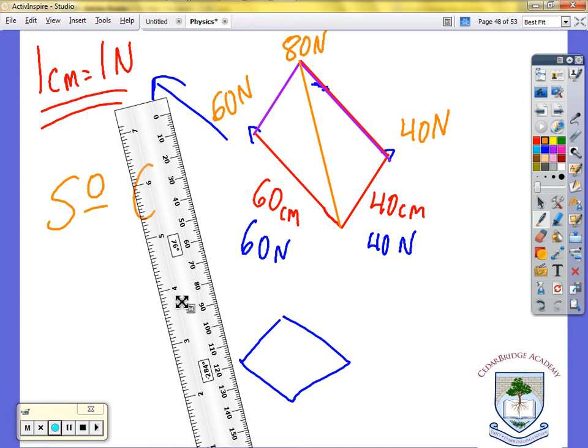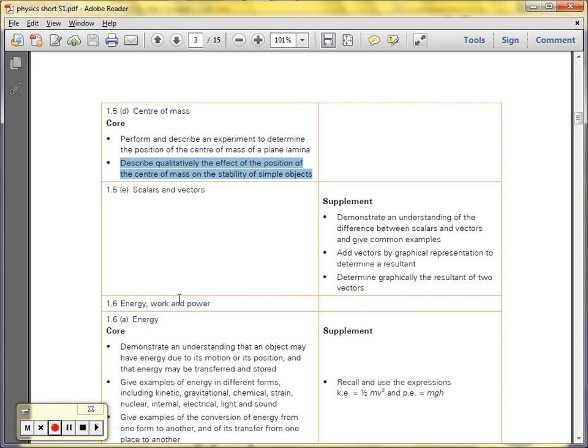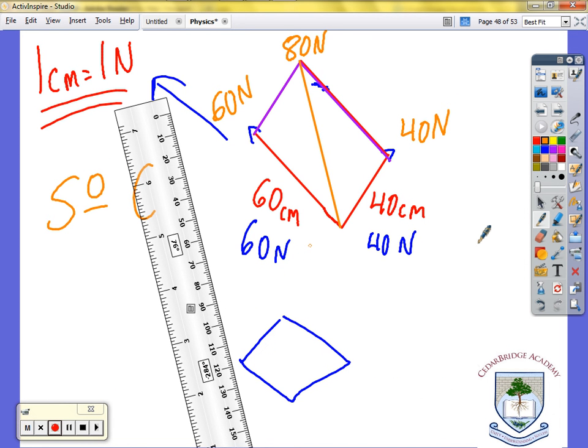It's a small topic but it's there. Demonstrate and understand the difference between scalars and vectors. Scalar is a magnitude. Vector is a magnitude and a direction. That's a nice way to say it. Add vectors by graphical representation to determine a resultant. Done. That's vectors and scalars. I should probably say that my yellow line is called your resultant.